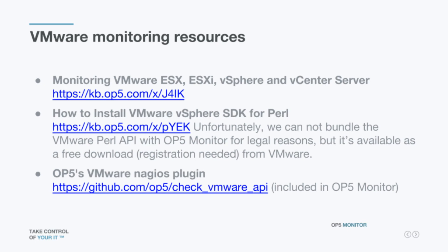Next question: do I need to install anything to use VMware monitoring, or does it work out of the box? For the plugin to work, you need to install VMware Perl SDK on your OP5 Monitor server where the plugin is run from. I recommend always installing the latest version, as the Perl SDK is backward compatible with versions 4 through 6 of ESXi and vCenter.